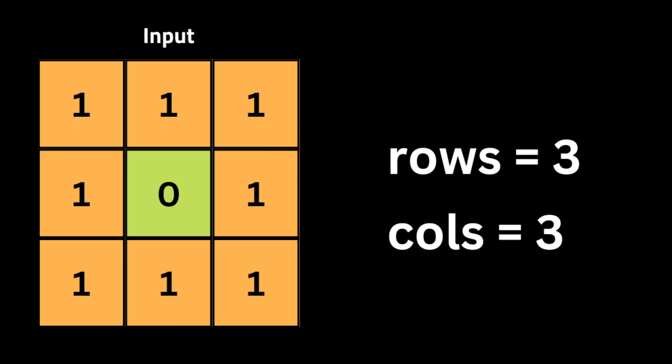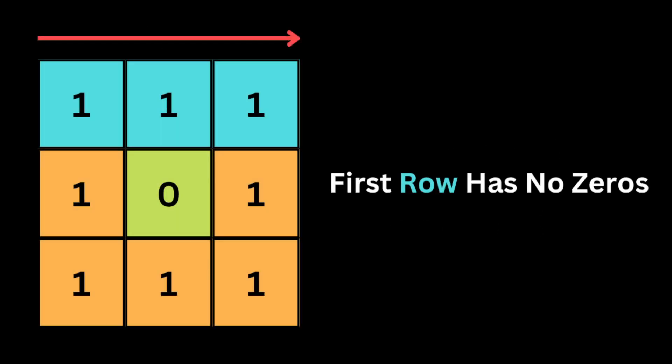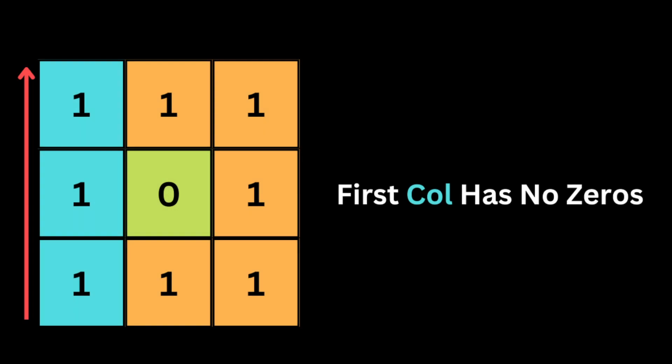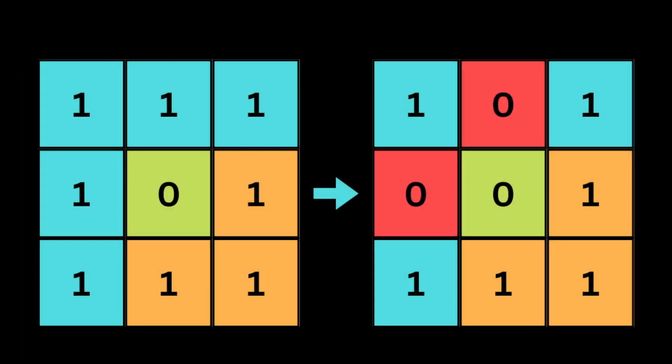So let's say we have this input matrix. To solve this problem, the first thing we do is calculate how many rows and columns we have in the matrix. Then we loop over the first row and check if there are zeros in it — we store that information in a variable for later use. Then we loop over the first column and check if there are zeros in it — we store that in a variable too. After that, we iterate throughout the rest of the matrix, excluding the first row and first column, and check for zeros.